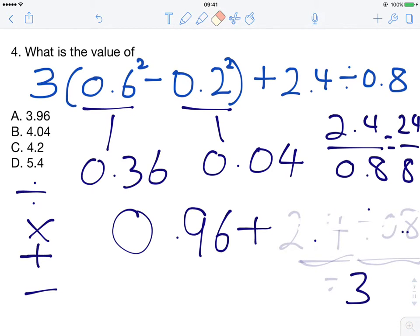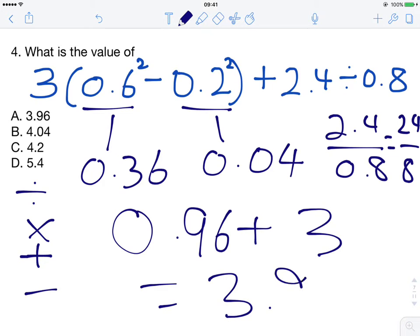So we can rewrite this problem again as 0.96 plus 3, which is equal to 3.96. That is A. So the answer to the question is A, 3.96.